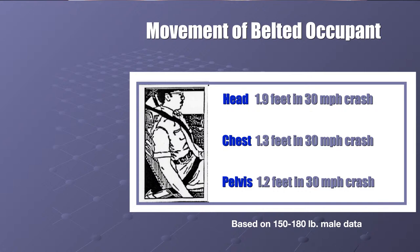Write this down: the movement of your body even in a seat belt — your head is going to move about 1.9 feet, your chest about 1.3 feet, and your pelvis about 1.2 feet. This is at 30 miles per hour. The faster you go, the more movement. This is why you want to be a good distance from the steering wheel — to allow the airbag to do its job and make sure the seat belt is nice and tight.